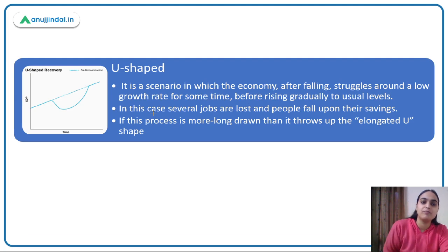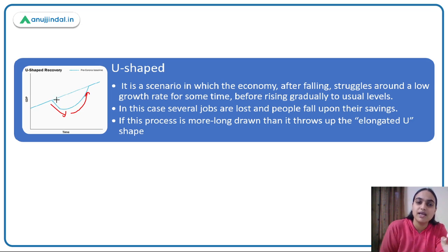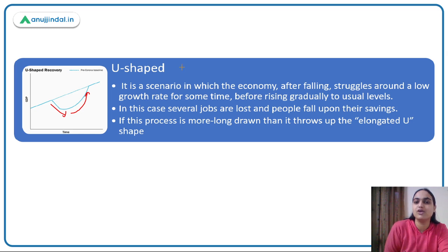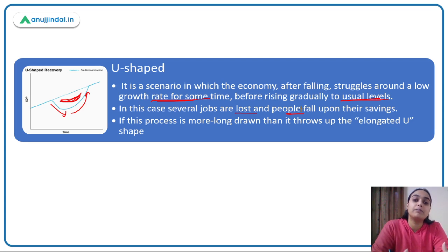Moving on to the U-shaped recovery. It is more or less like V-shaped, where after a sudden decline we see the economy improving. But because it is U-shaped, it denotes that the slow growth phase continues for comparatively a longer time period. When this low growth phase continues for a really very long time, we call it an elongated U. In this scenario, the economy, after falling, struggles around a low growth rate for quite some time before recovering to usual levels. Several jobs are lost and people depend on their savings to bear that kind of situation.